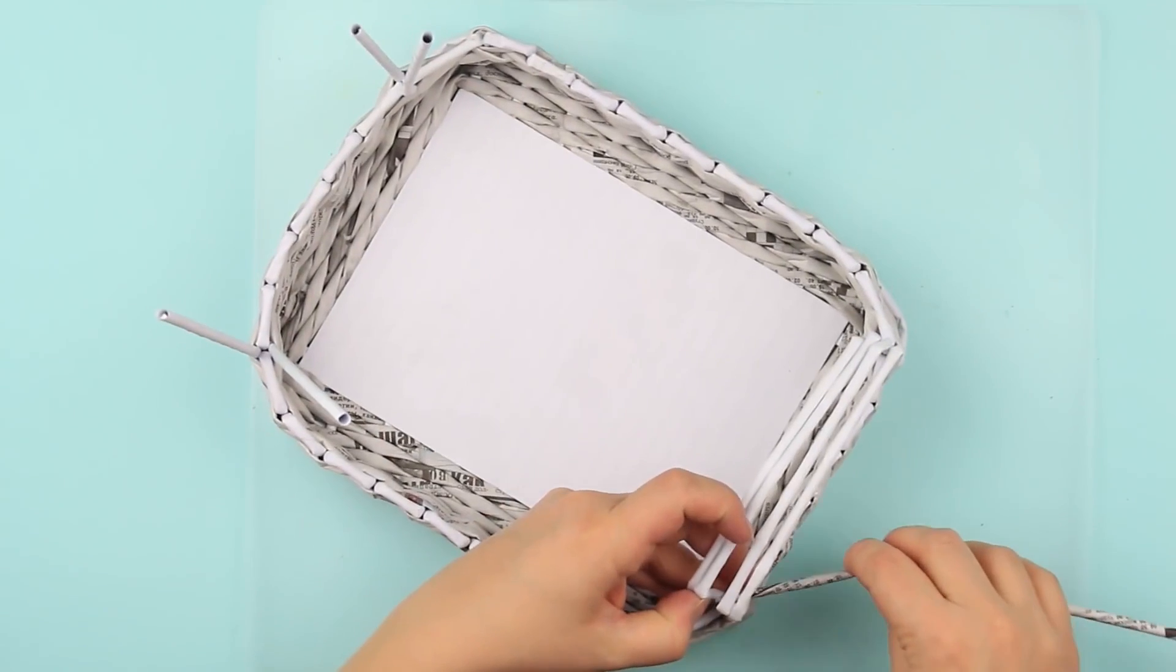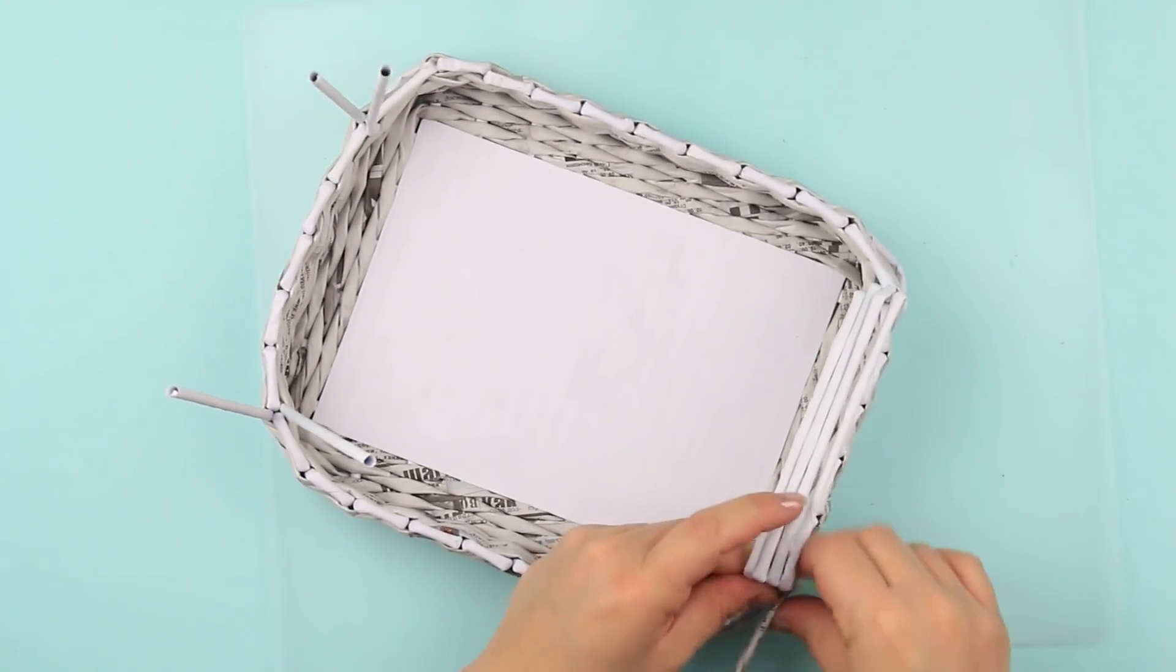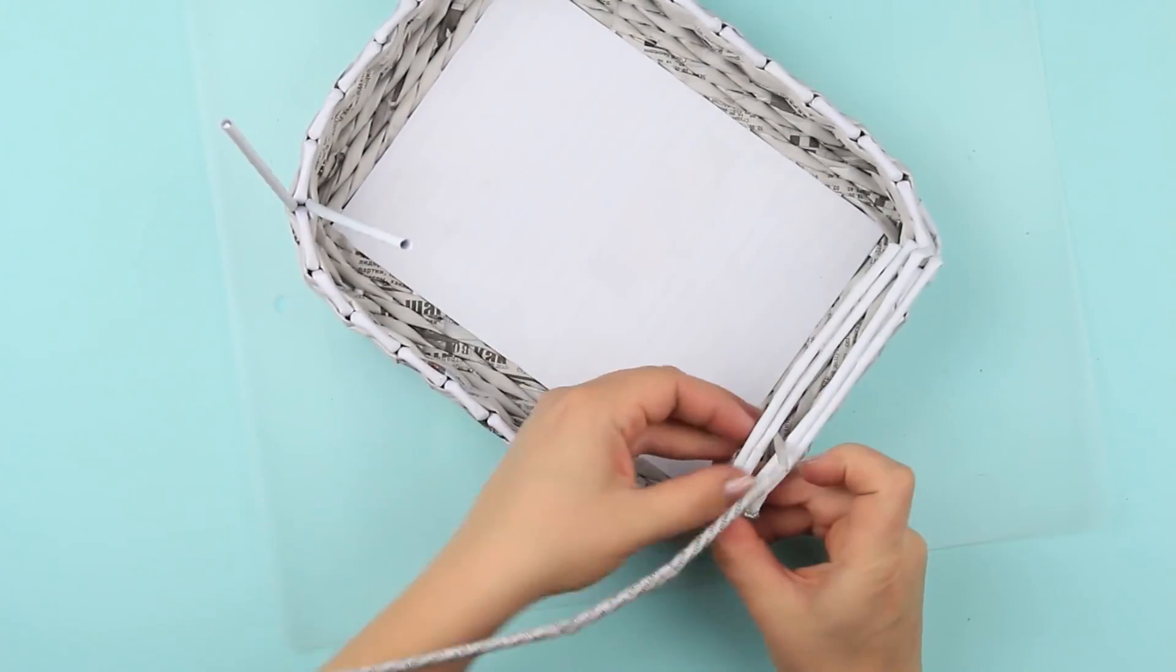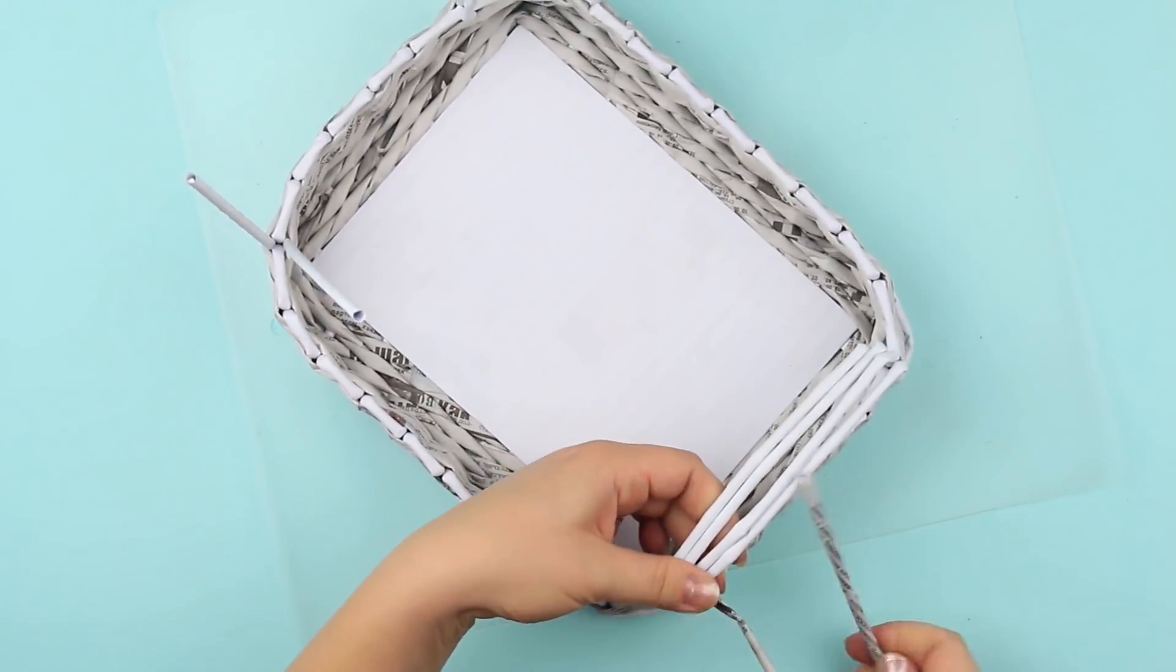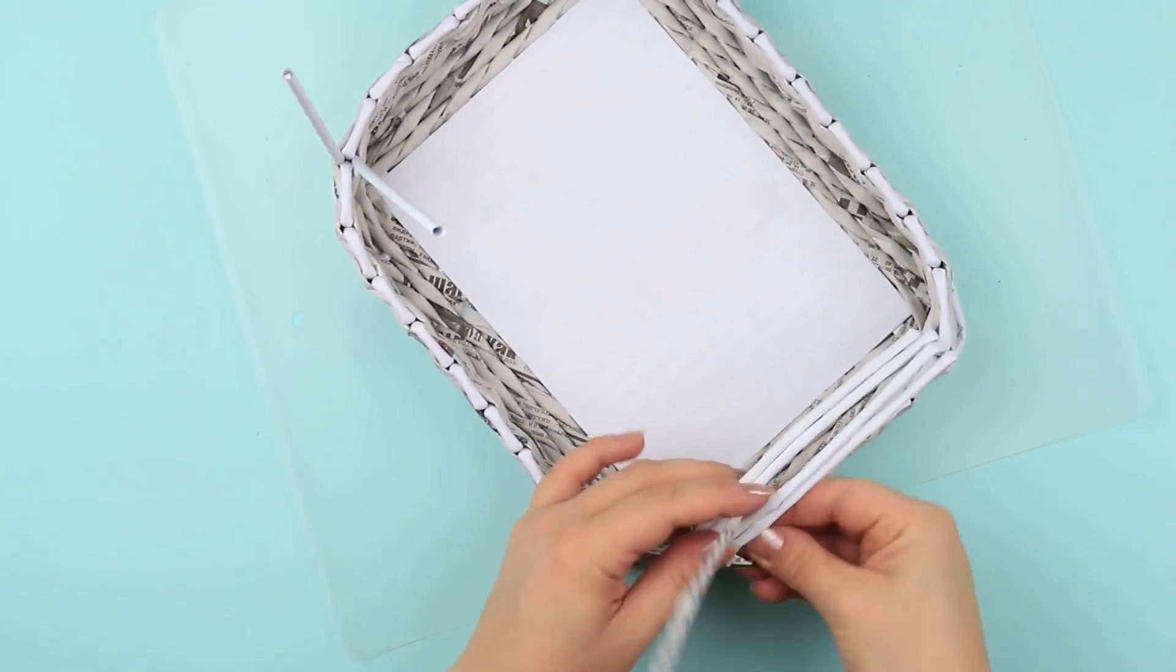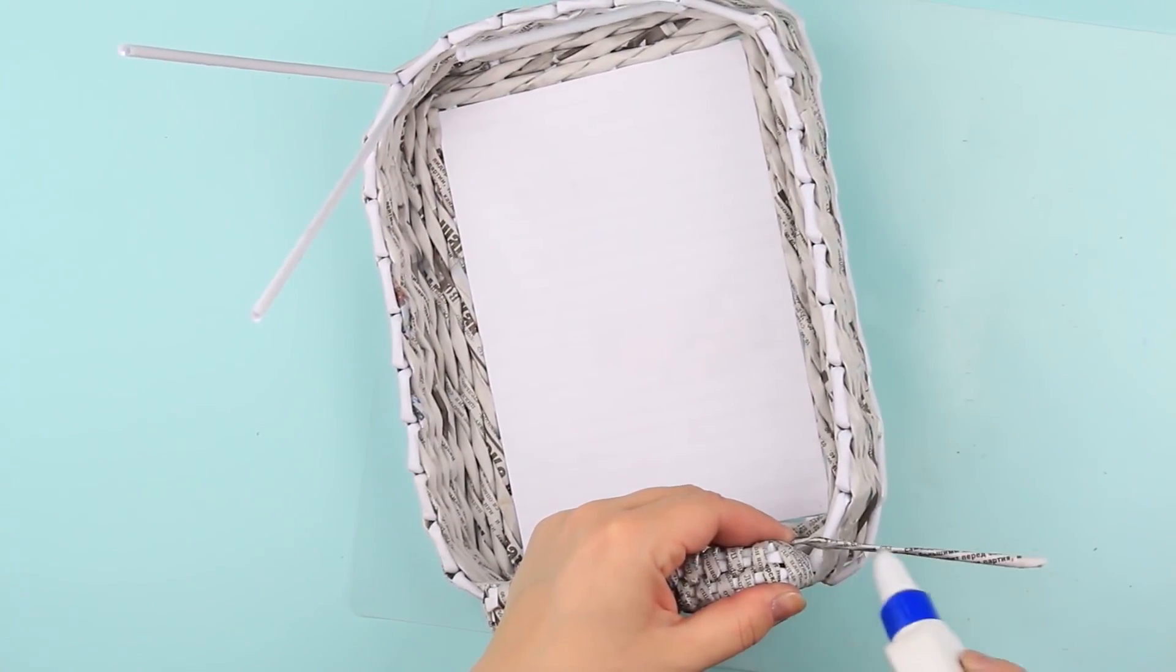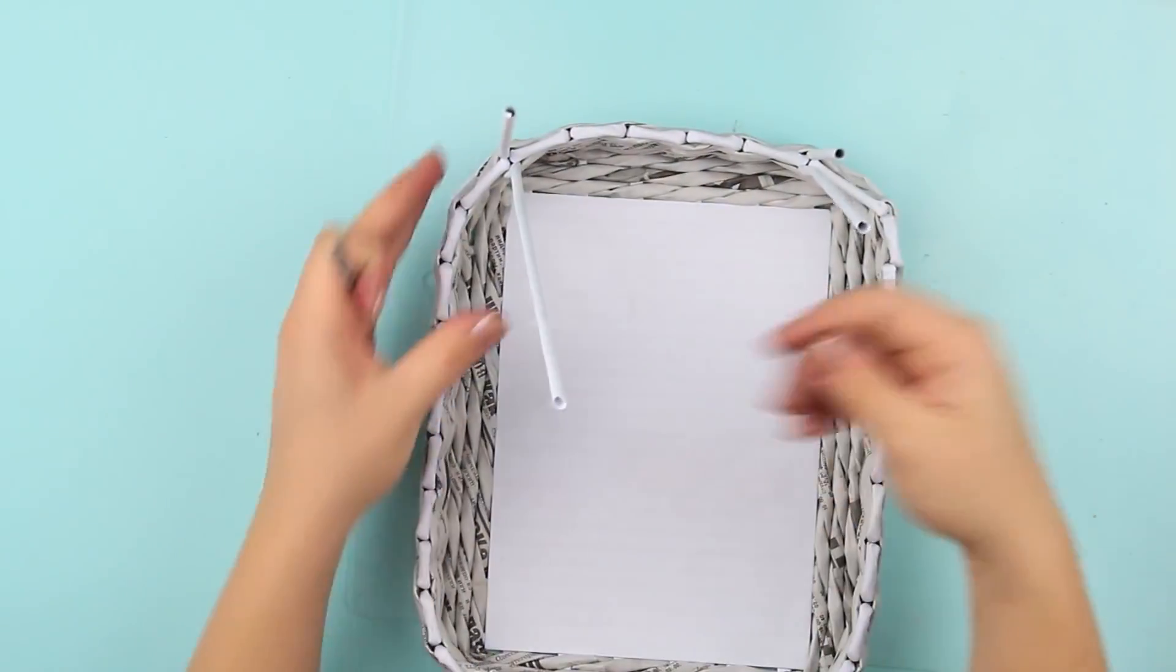Add glue to the ends and tuck them into the weaving. Wrap the handle tightly with a newspaper tube. Then weave around each pair. Secure the tube end and repeat for the other handle.